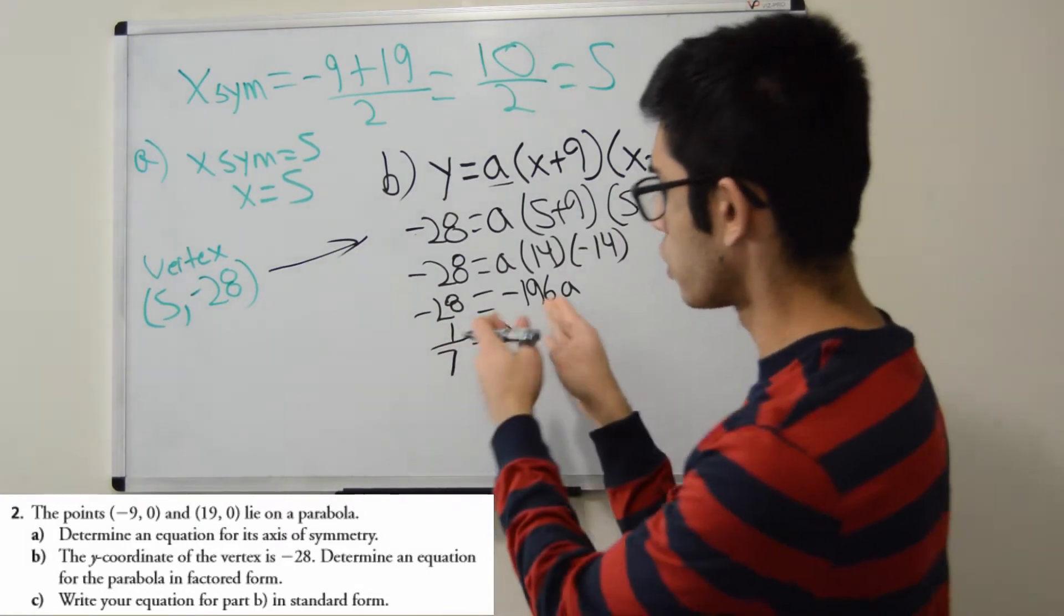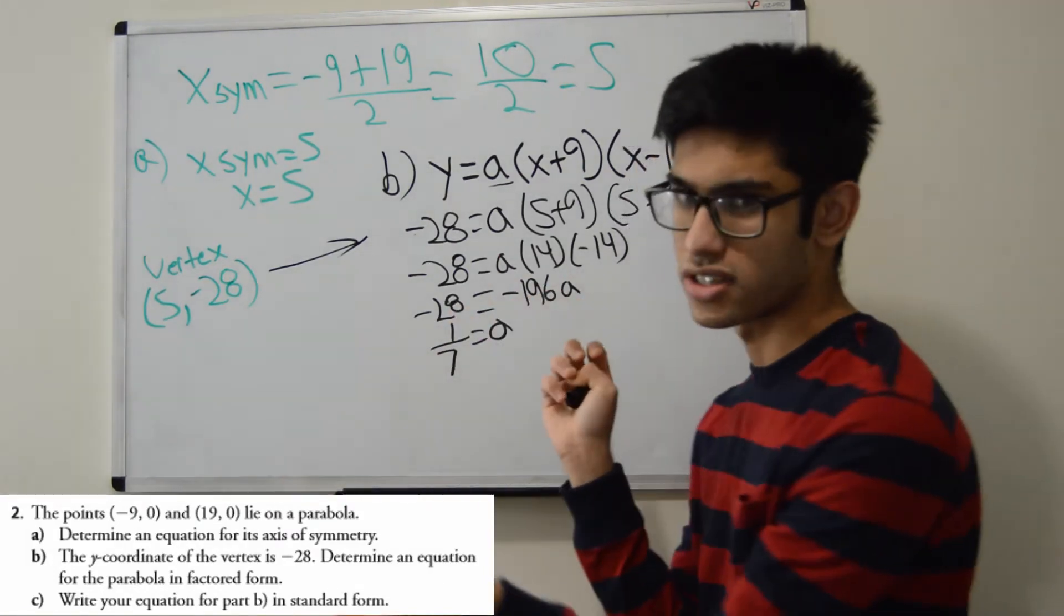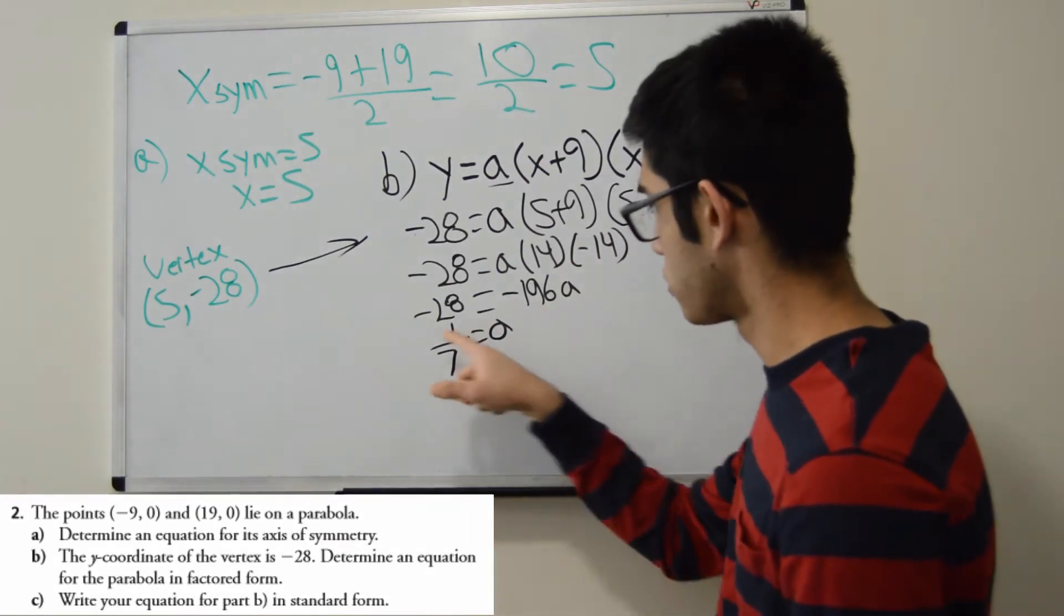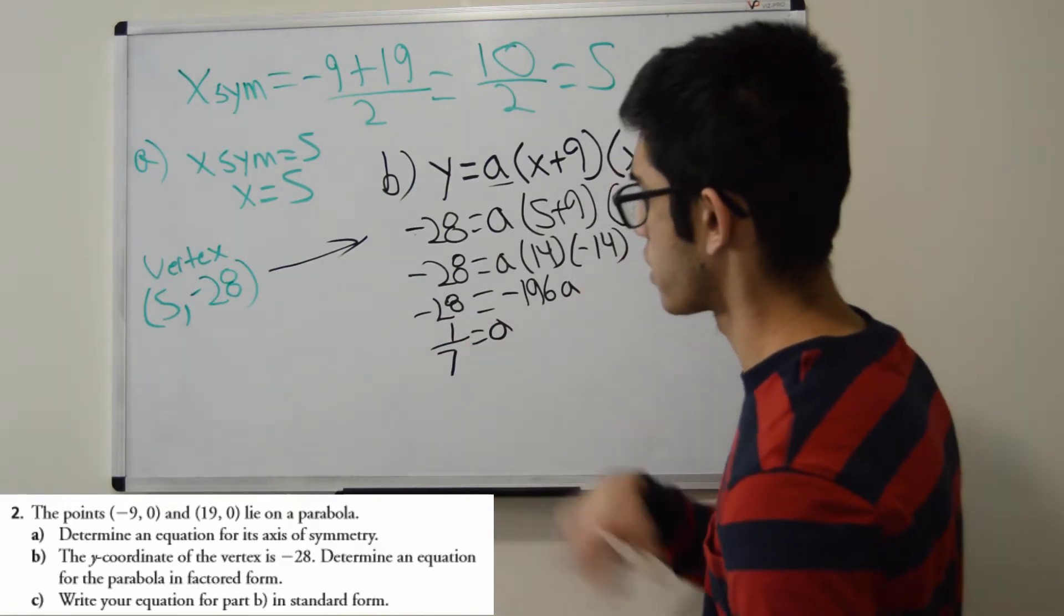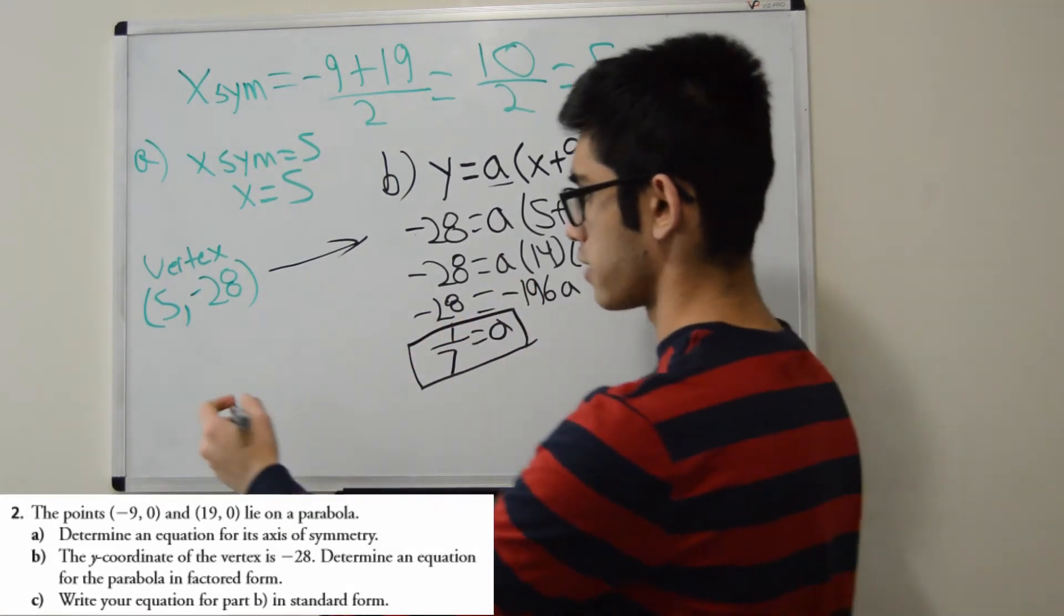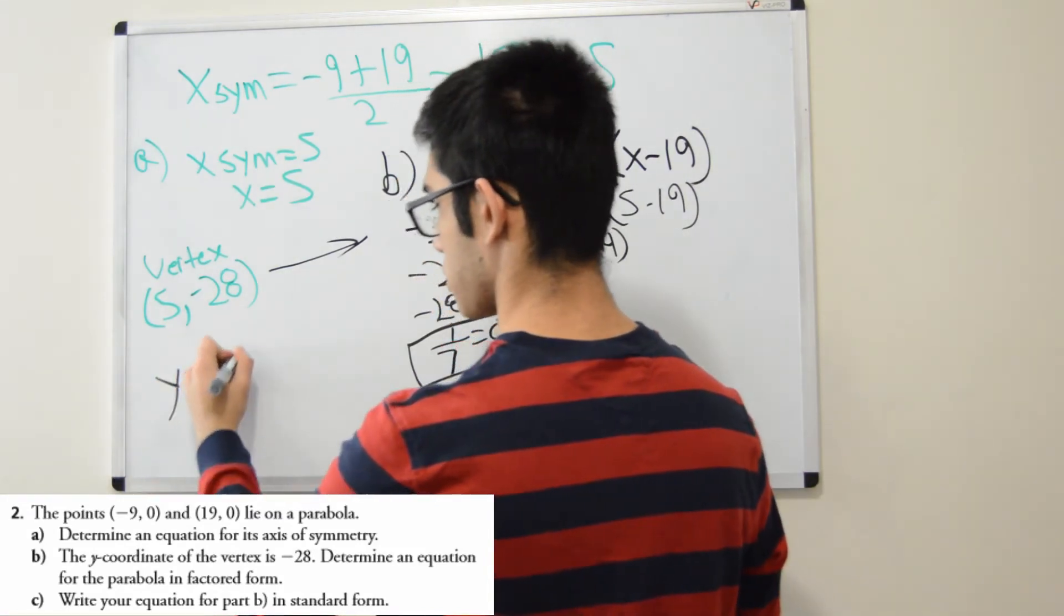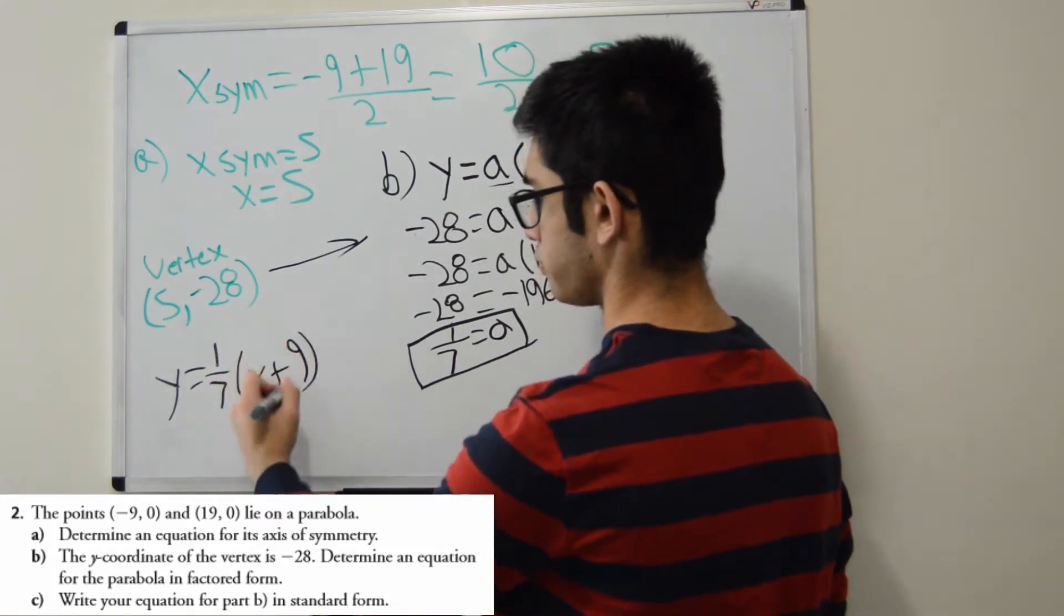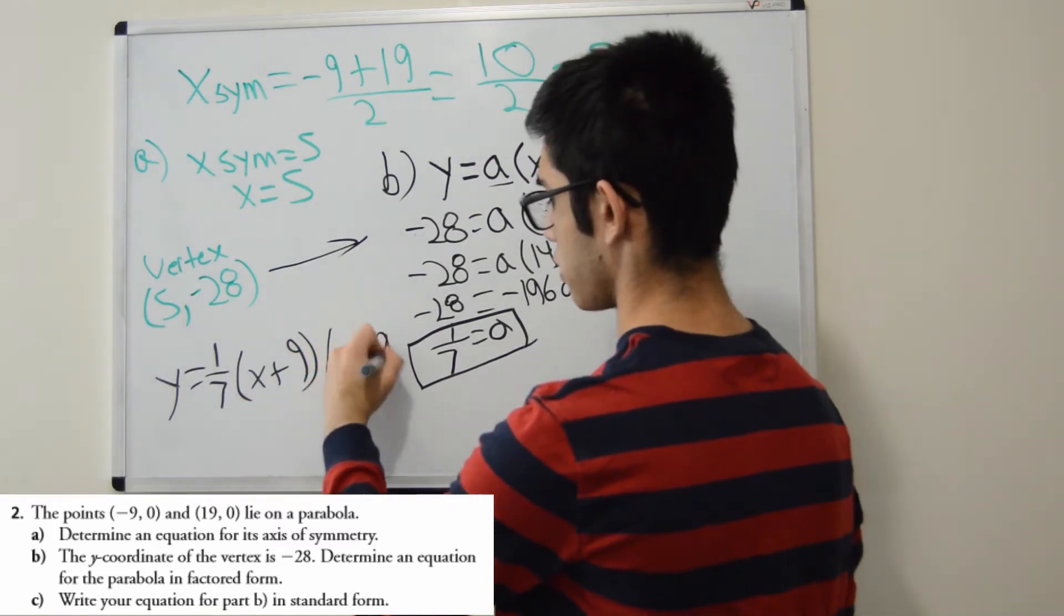So a is actually equal to 1/7. You divide both sides by -196 to isolate a. So that's just simple algebra. Dividing both sides by -196 to isolate a and you get 1/7 for a. So now we have our a value. So let's write this in factored form. So y = 1/7, that's my a value. Now I'll just write x + 9, that's my first zero, -9. And my other is x - 19. There we go. That's the equation in factored form.